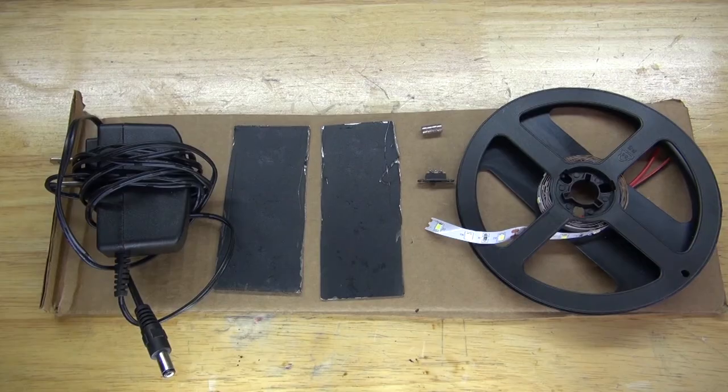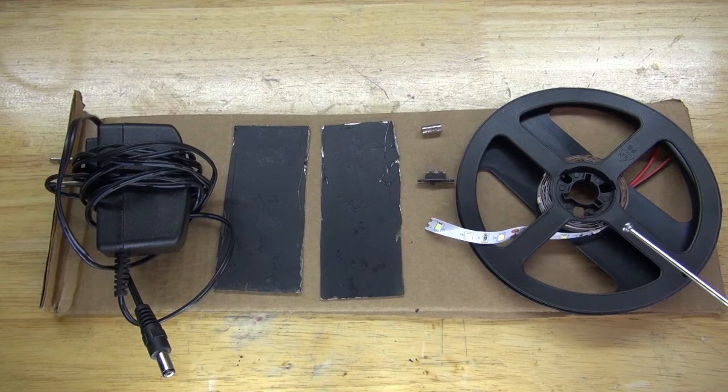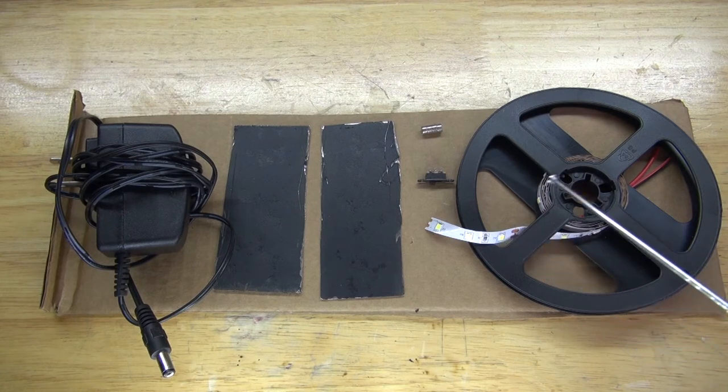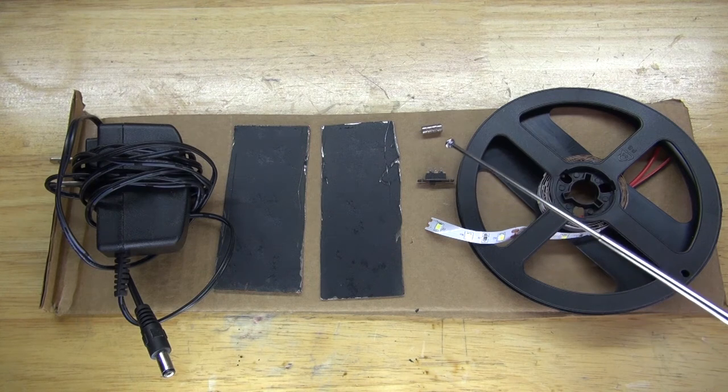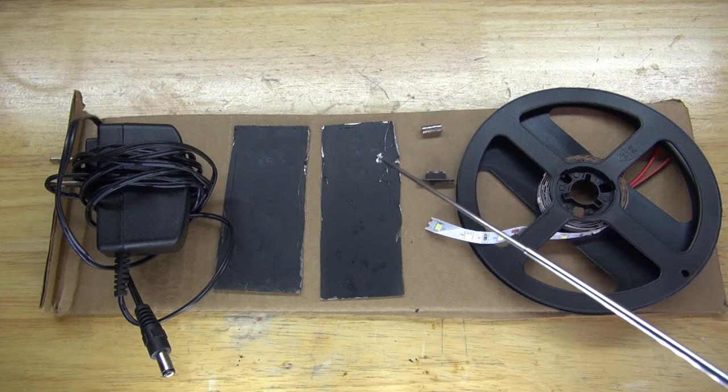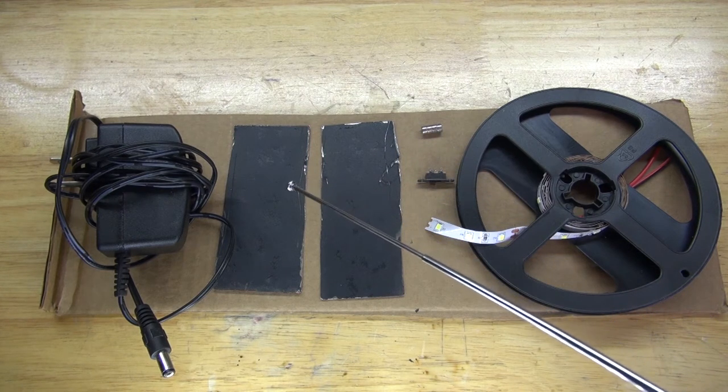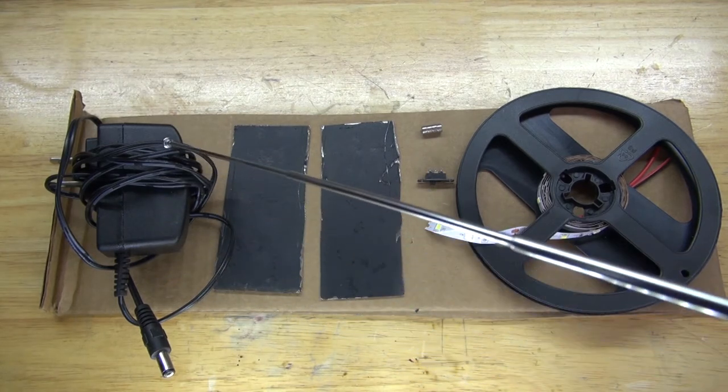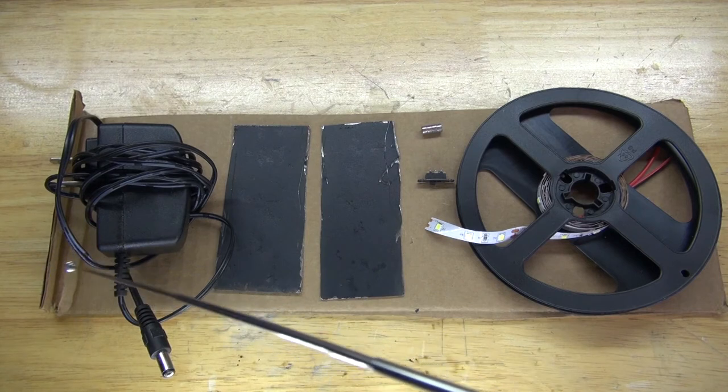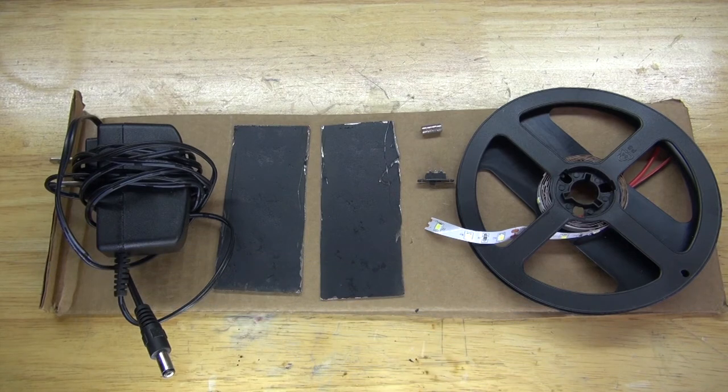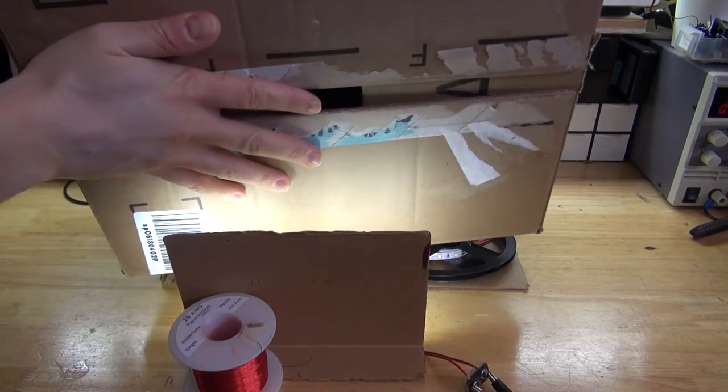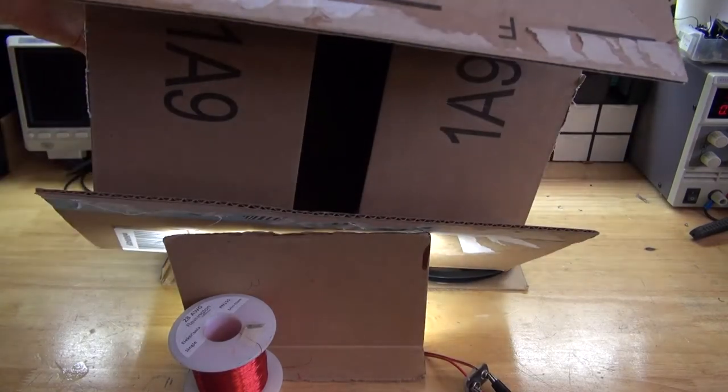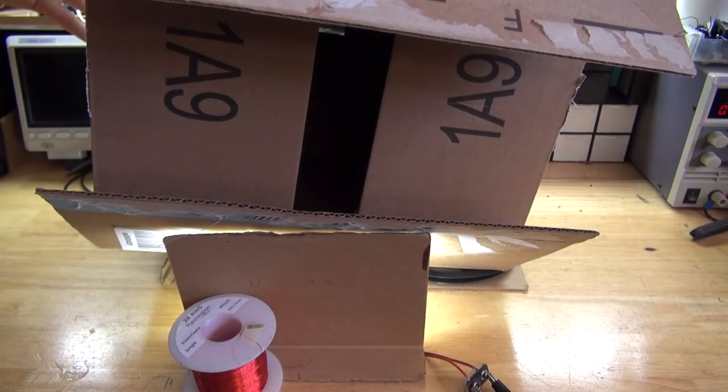These are the items you're going to need for this project: LED strands, a slide switch, neodymium mini magnets, two metal plates, a 12 volt power supply, a piece of cardboard, and a large cardboard box. Now let's go and assemble this project.